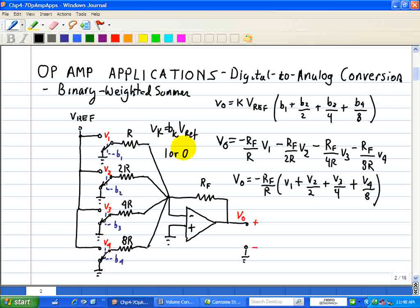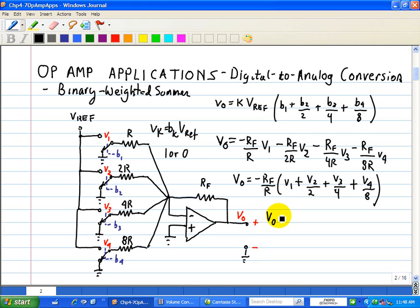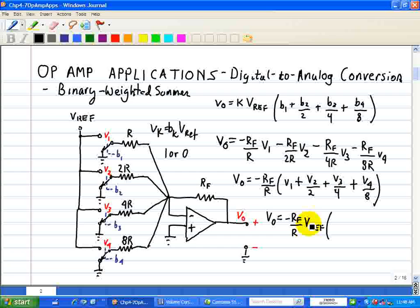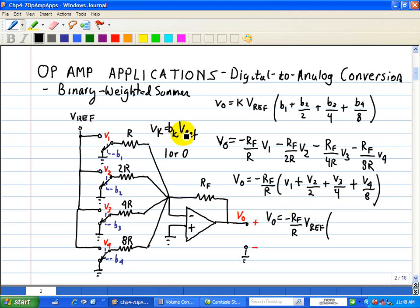Now, using this relationship, we can rewrite this VO as follows. We have minus RF divided by R, and we'll factor out the V reference. In other words, we replace V1 with B1 times V reference, B2 with B2 times V reference, and so on. So, therefore, this would be B1 plus B2 over 2 plus B3 over 4 plus B4 over 8.